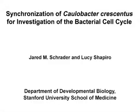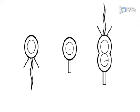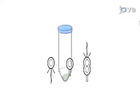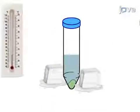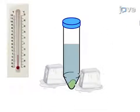The overall goal of this procedure is to isolate colobacter swarmer cells in order to establish a synchronized cell culture. This is accomplished by first growing a mixed culture of colobacter cells and then briefly arresting growth by re-suspending the cells in cold medium.